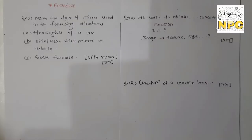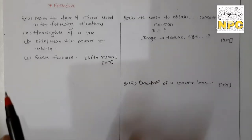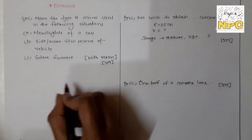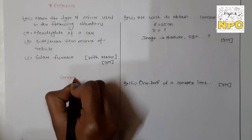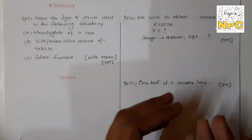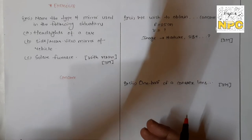Problem number one: name the type of mirror used in the following situations. First one is headlights of a car. For car headlights, you generally use a concave mirror. The feature of a concave mirror is that if you place the object at the focus, you get parallel rays going outward.